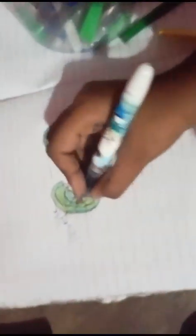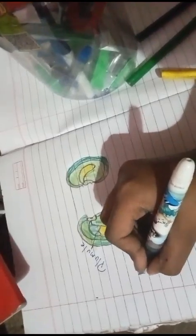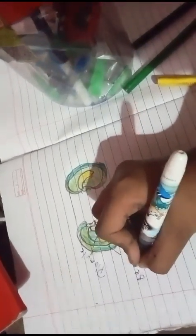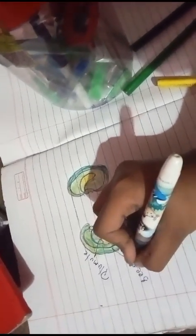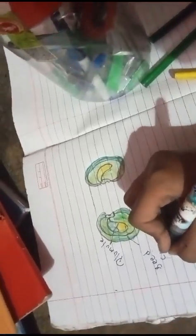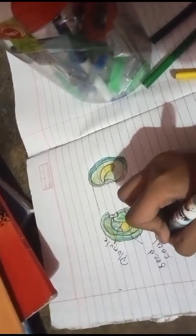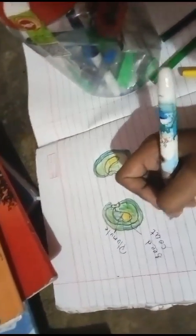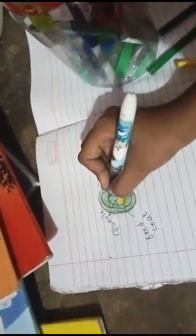Plumule. Next, this is called seed coat: S-E-E-D C-O-A-T, seed coat.